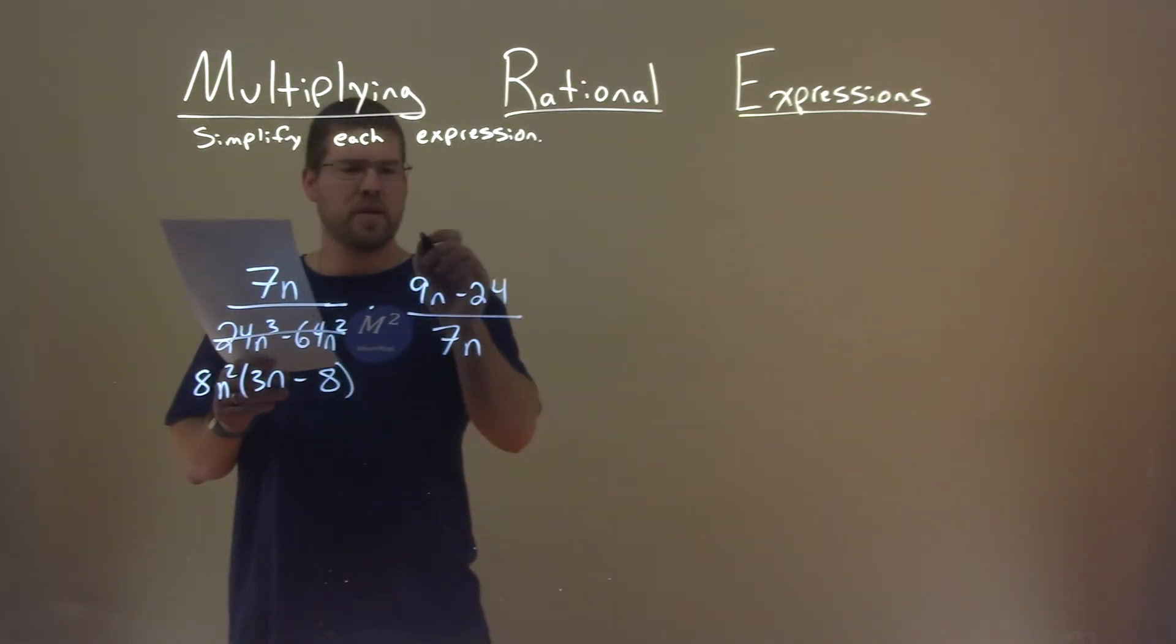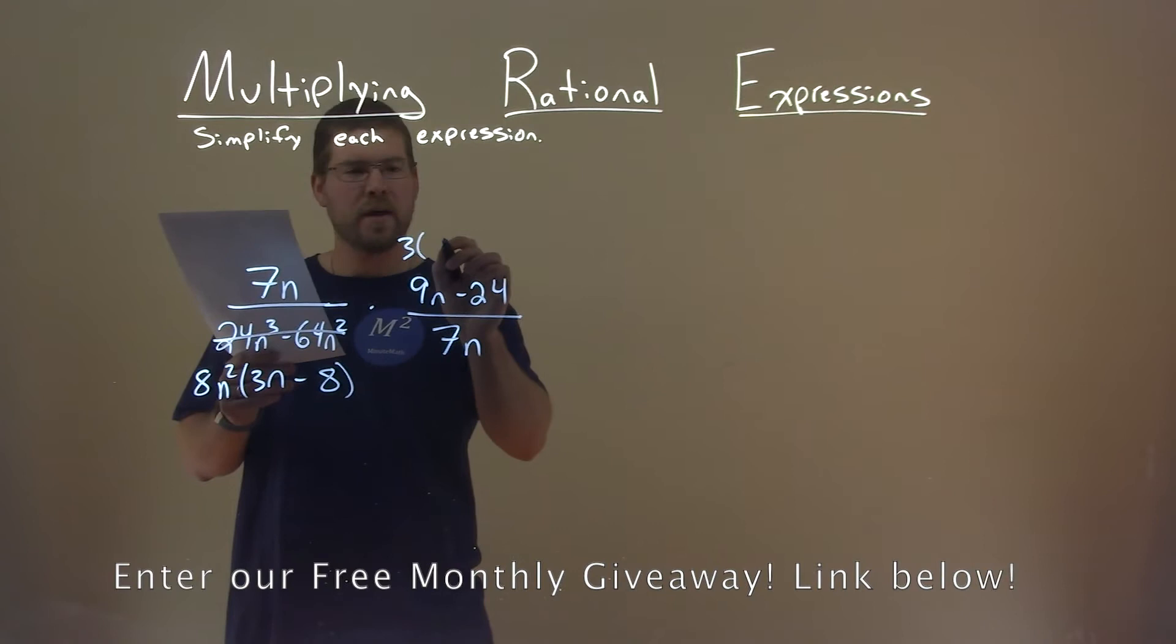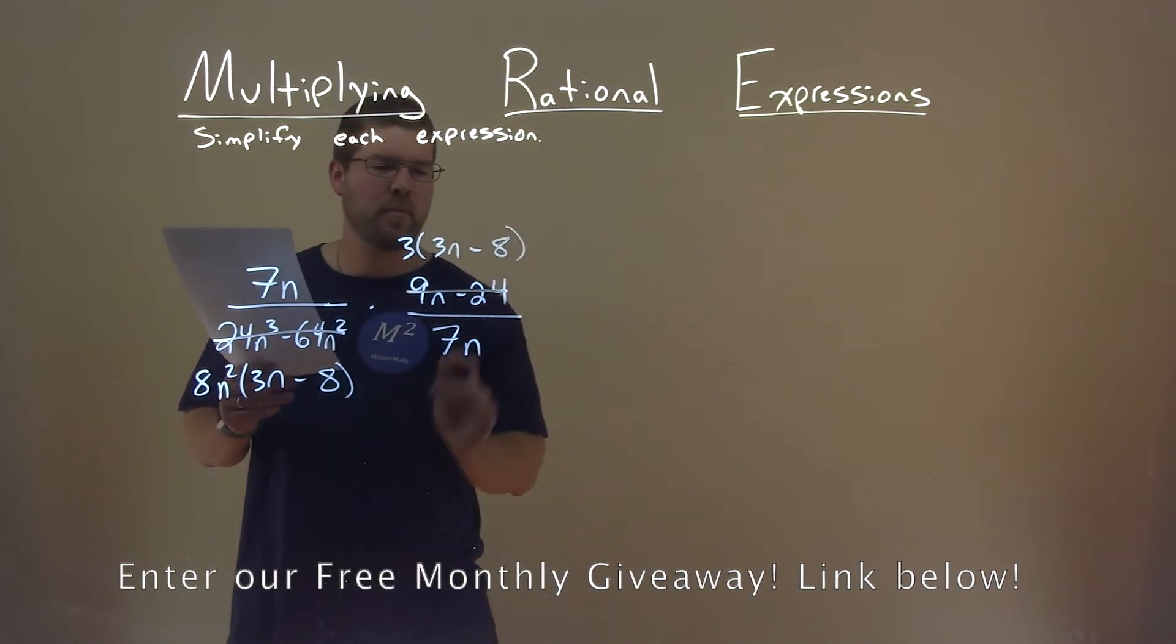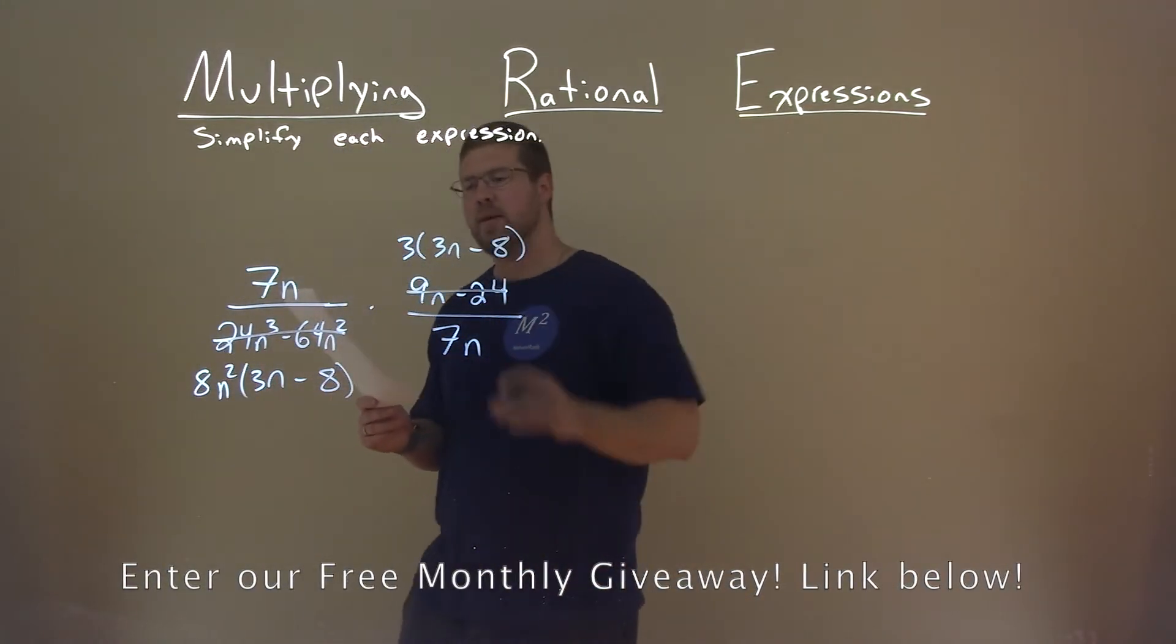Up here, same thing, I can pull out a 3, and we're left with a 3n minus 8. So I'll mark that off that I've replaced that with something else.